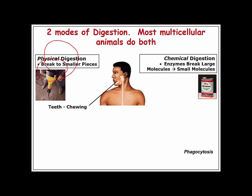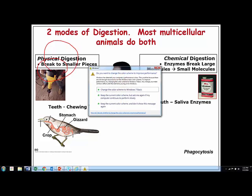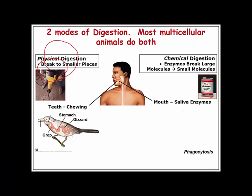Teeth chewing is an example of physical digestion. Gizzards that birds have are also part of physical digestion. In our mouth we have salivary glands which produce amylase, an enzyme that helps break things down — that's very critical.